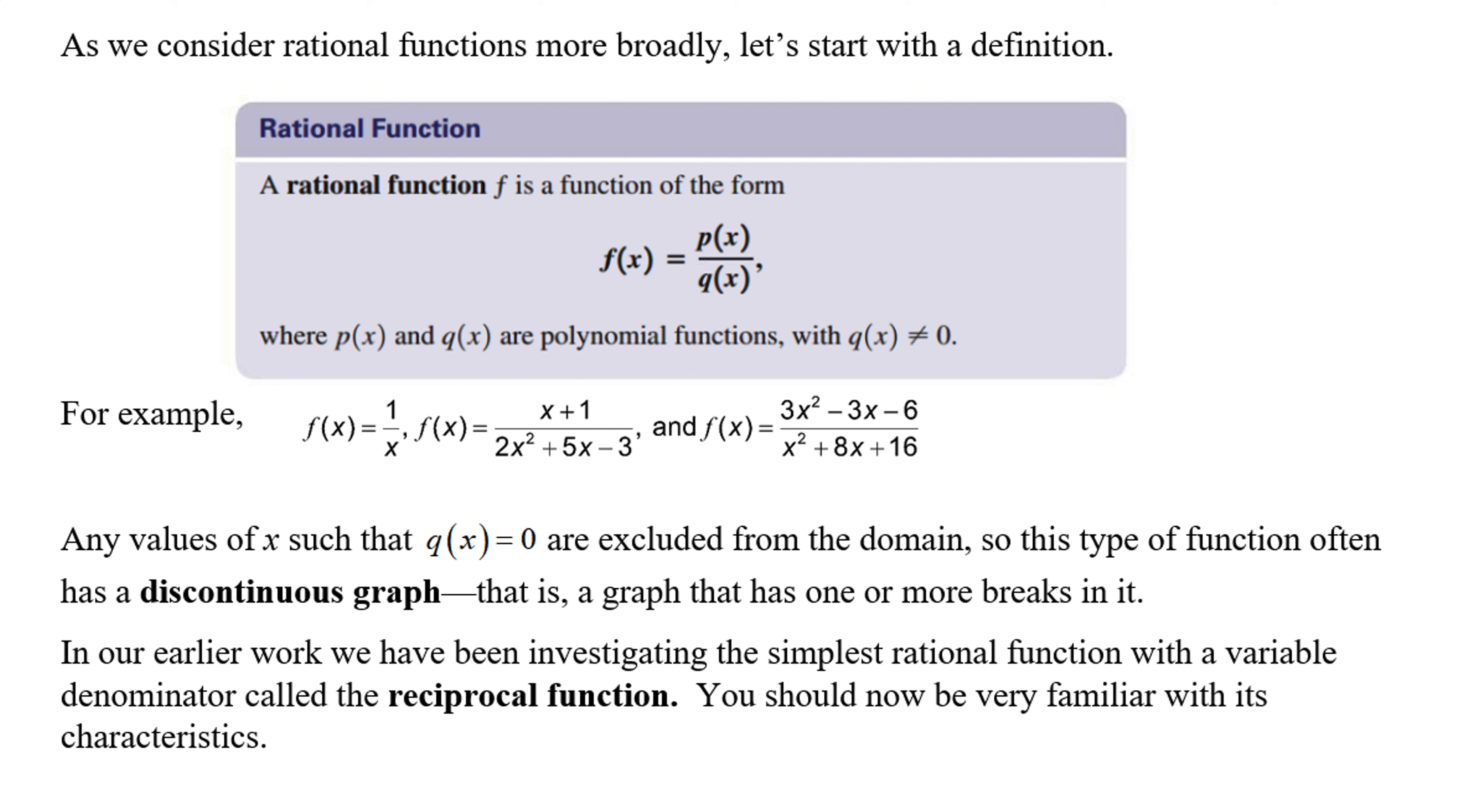Okay, so after our experiment, now we're going to look at the formal definition of a rational function. A rational function f is a function of the form f of x equals p of x over q of x. I have seen n of x over d of x, n standing for numerator, d standing for denominator. But what's important to understand is that these two function notations are polynomial functions. What's most important is your denominator function cannot be equal to zero because that's where you are undefined, and we've just discovered that's where your vertical asymptotes are going to be at.